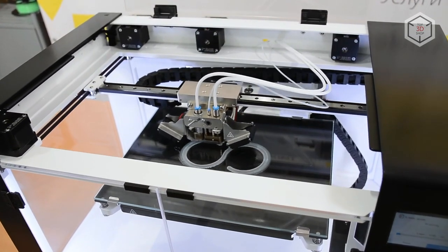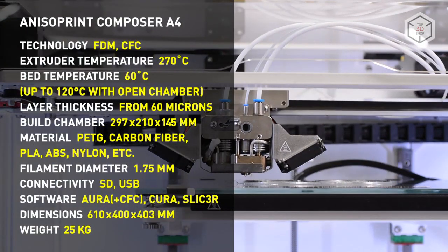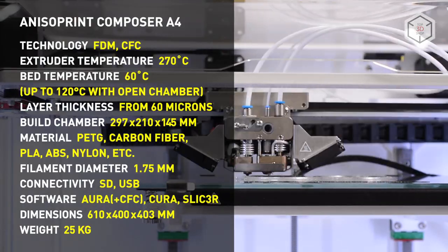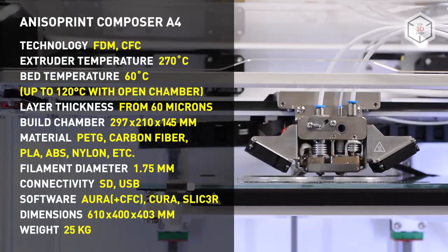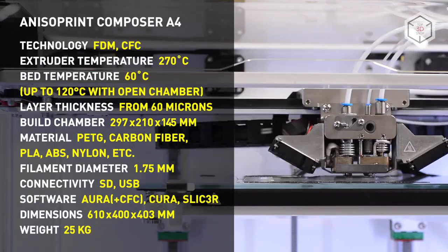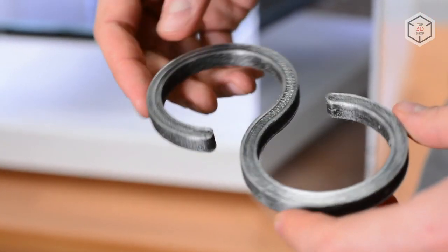The technology of co-extrusion of a continuous composite fiber, Anisoprinting, allows you to work with any plastic whose melting point does not exceed 250 degrees Celsius: PLA, ABS, Nylon, PETG, Polycarbonate, Polyurethane. In addition, you can use composites with particulate fillers.